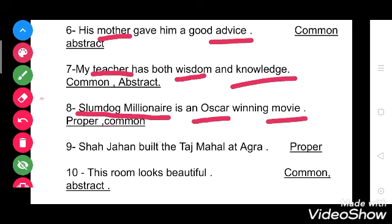Now see the ninth: Shah Jahan built the Taj Mahal in Agra. So Shah Jahan is a particular name of a person — it is proper. Taj Mahal is a proper noun, name of a monument. Agra is a name of a city, so it is proper noun.